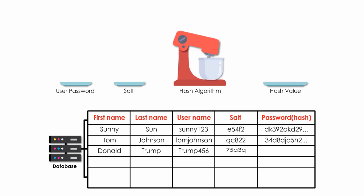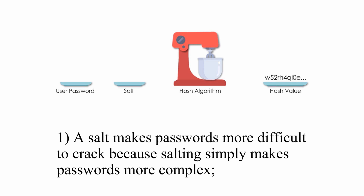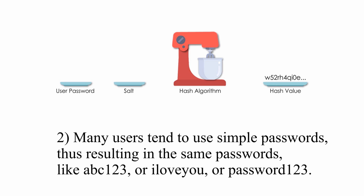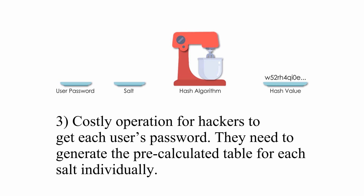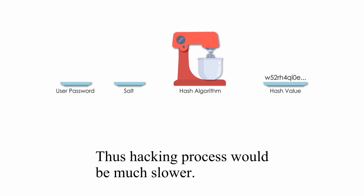Password with salt has at least three benefits. One, a salt makes a password more difficult to crack because salting simply makes passwords more complex. Two, many users tend to use simple passwords, thus resulting in the same passwords like abc123 or iloveyou or password123. Salting would generate a unique password for each user, thus reducing the chance of passwords being hacked in bulk. The third benefit is costly operation for hackers to get each user's password — they need to generate a precalculated table for each salt individually. Thus, the hacking process would be much slower.